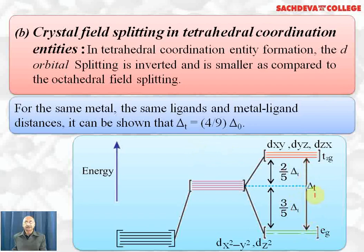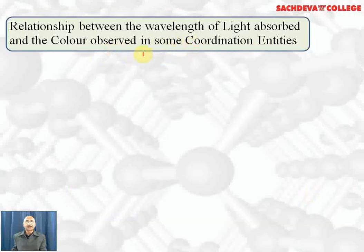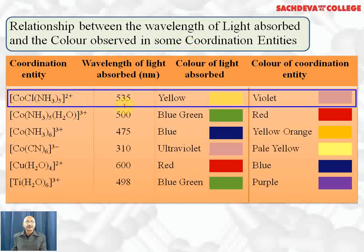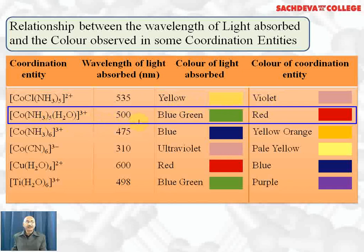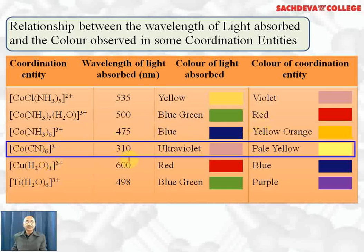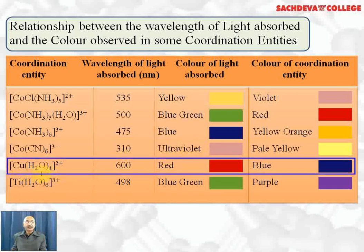The relationship between wavelength of light absorbed and color observed: a complex absorbing 535 nm (yellow) radiates violet — its complementary color. Another complex absorbing 500 nm (blue-green) radiates red. One absorbing 475 nm (blue) radiates yellow. A complex absorbing 310 nm (ultraviolet) appears pale yellow, and tetraaqua copper(II) absorbing 600 nm (red) appears blue.